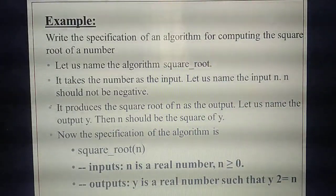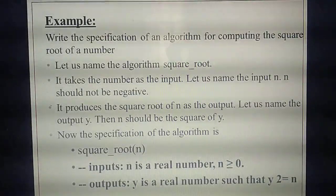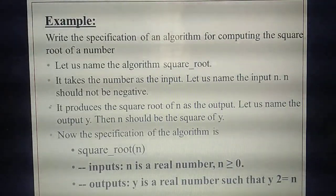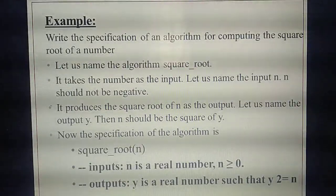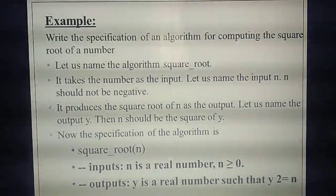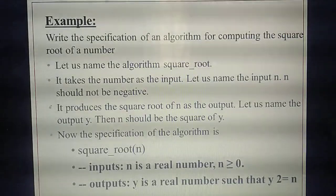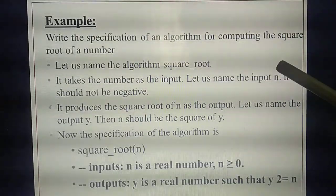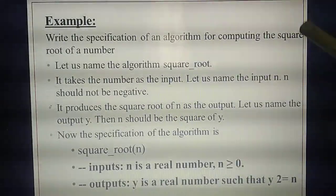Here, the name of the algorithm is 'Square Root.' What is the second step? You need to give the input. To square a number — for example, 2 square is 2×2, 3 square is 3×3 — you only need one number. So how many variables do you declare? One variable. They give the input variable as N.